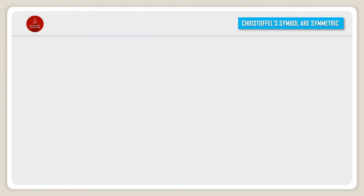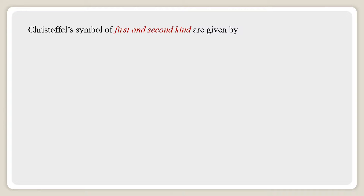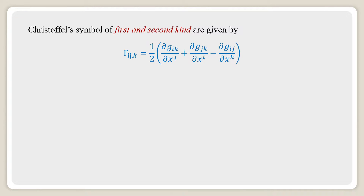Christoffel Symbols are symmetric. Christoffel Symbols of the first and second kind are given by: Gamma_{IJK} equals half of (∂g_{IK}/∂x^J + ∂g_{JK}/∂x^I − ∂g_{IJ}/∂x^K). The second kind is given by Gamma^K_{IJ} equals g^{Kα} times Gamma_{IJ,α}.